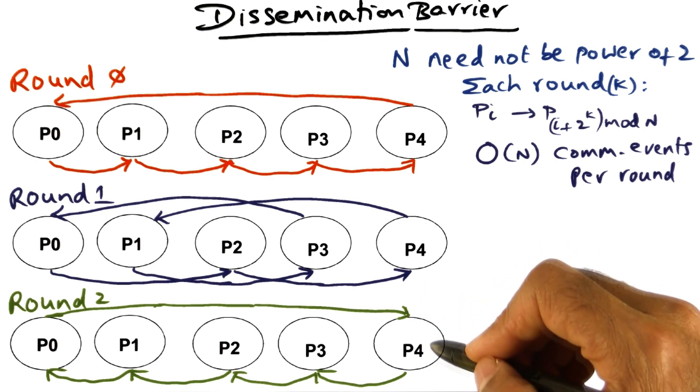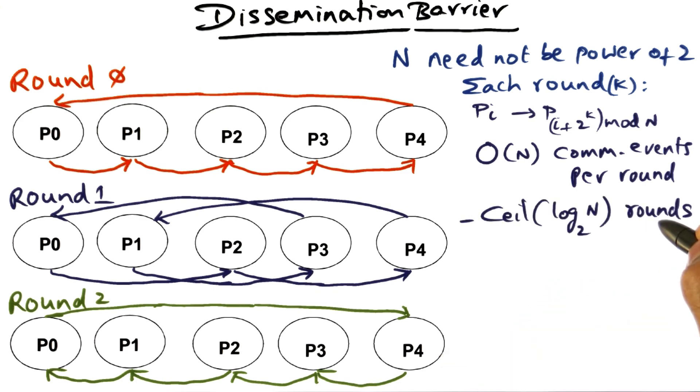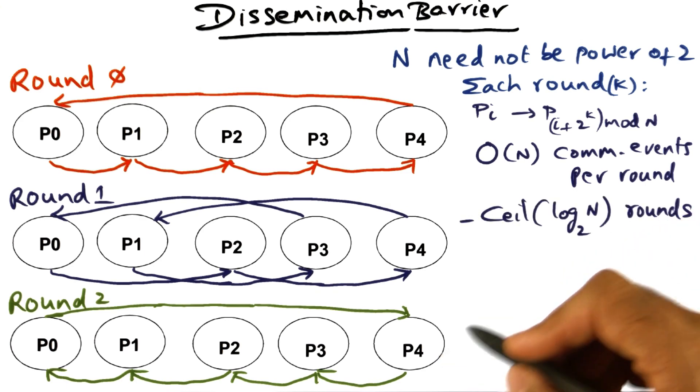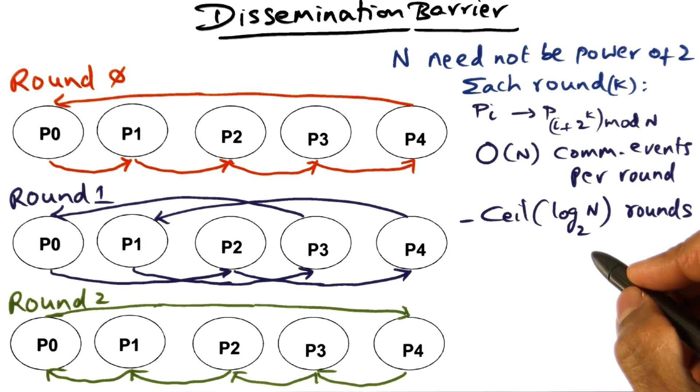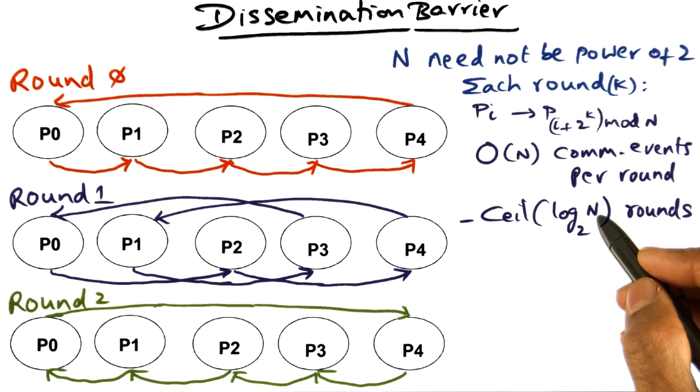It's common knowledge that for every processor, everyone else has also arrived at the barrier. So how many rounds does it take to know that everybody has arrived at the barrier? It's ceiling of log n to the base two, and the ceiling because n need not be a power of two.